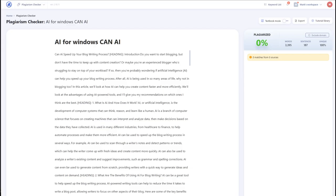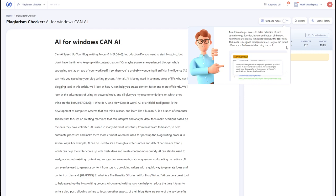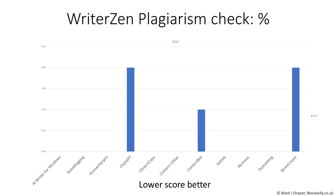The next test I did was using the Writer's Zen built-in plagiarism checker, and I was pleased to see that they all passed. Anything less than 3% is fine for me, because you're bound to get a few false positives when you're writing about something — you're very likely to come up with similar titles and headings.